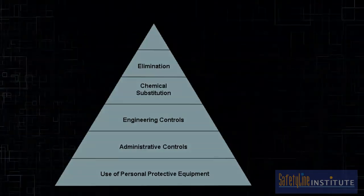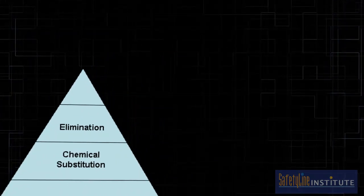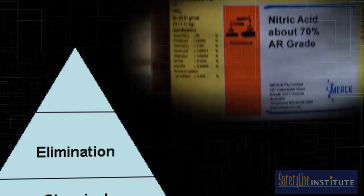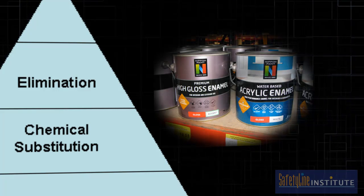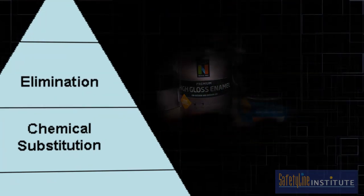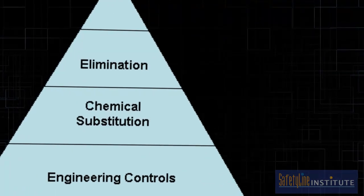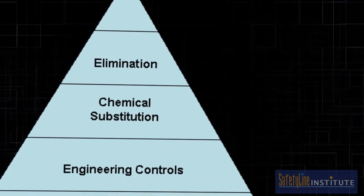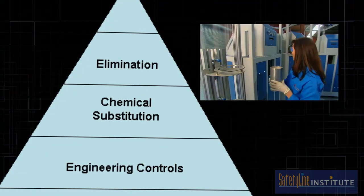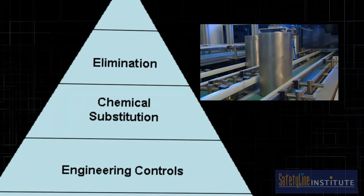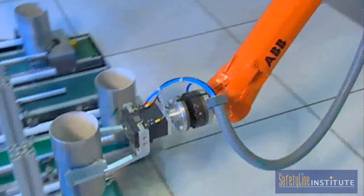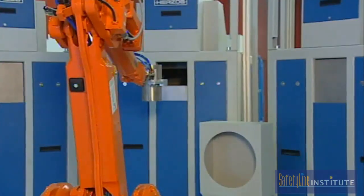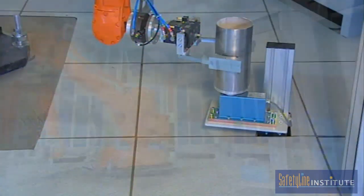Sometimes it is possible to eliminate chemicals entirely — for example, by using microfibre cleaning cloths instead of cleaning chemicals. Substitution is about choosing a safer chemical or a safer form of the chemical, for example using a water-based paint instead of an oil-based paint, or using a solid reagent in pellet form instead of a dusty form. Engineering controls include ventilation systems, automatic systems, enclosed systems, or other engineering measures that contain the hazardous substance or limit workers' exposure. This robot handles all samples in an isolated area, reducing the need for workers to handle dusty material.